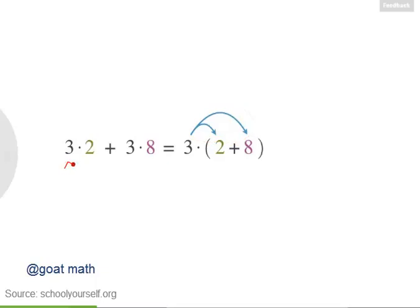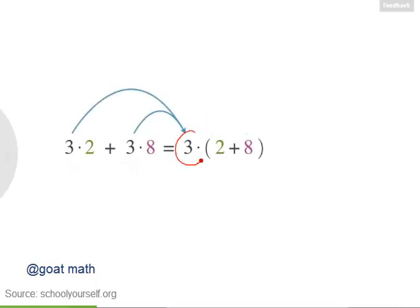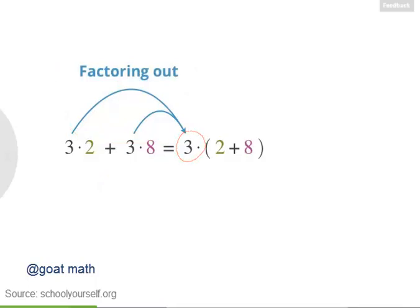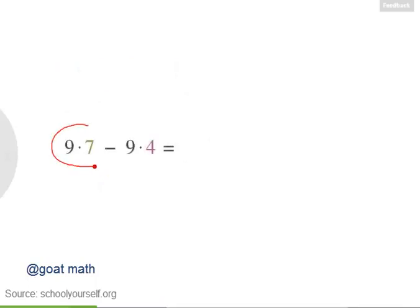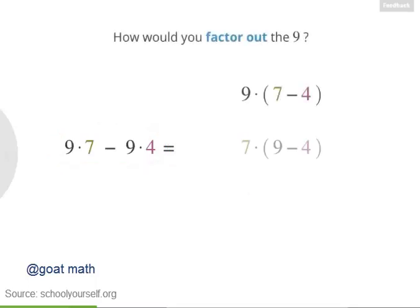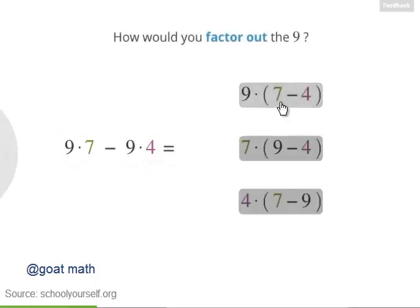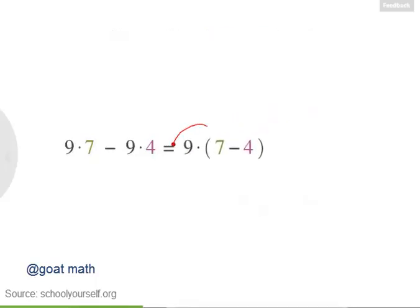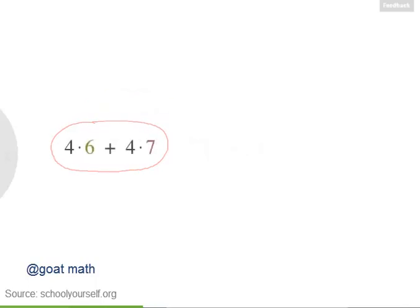That's because you can distribute the 3 onto the 2 and the 8. But you can also think about this another way: you're adding together two terms with a factor of 3 in them, so you can write it with the 3 being multiplied outside the parentheses. Starting with an expression like this and undistributing the 3 is called factoring out. So for this sum, we factored out a 3. Let's look at another example: 9 times 7 minus 9 times 4. How would you factor out the 9?